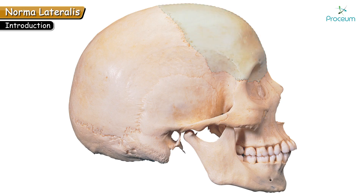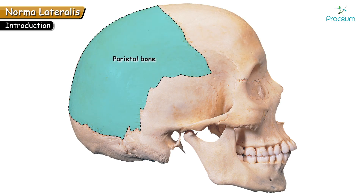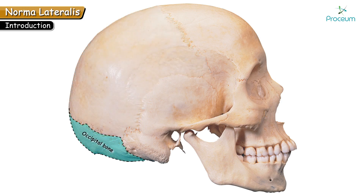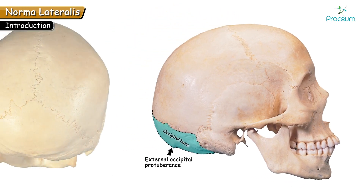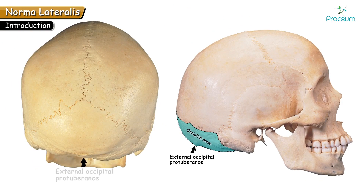Next to the frontal bone is the parietal, which is a quadrilateral bone. The posterior-most bone is the occipital bone, which shows a bony prominence known as the external occipital protuberance. This external occipital protuberance is best viewed in Norma occipitalis.